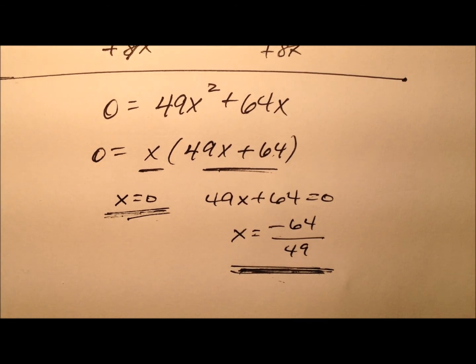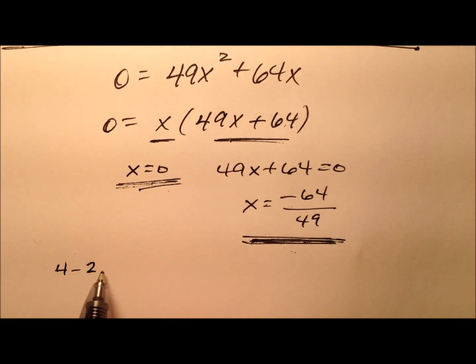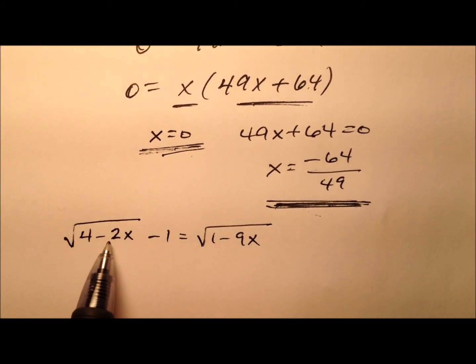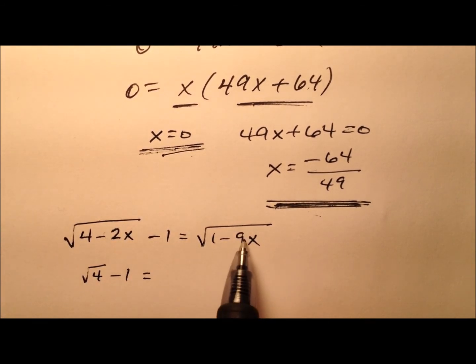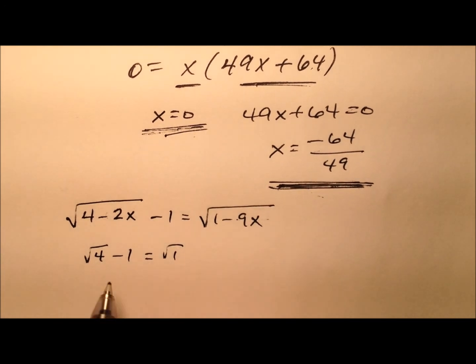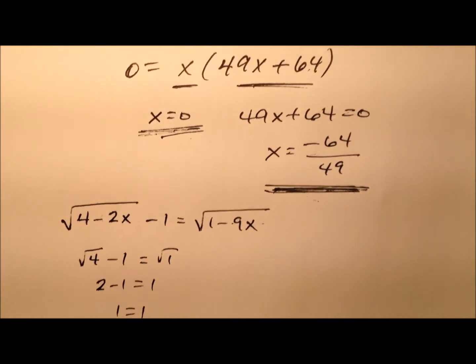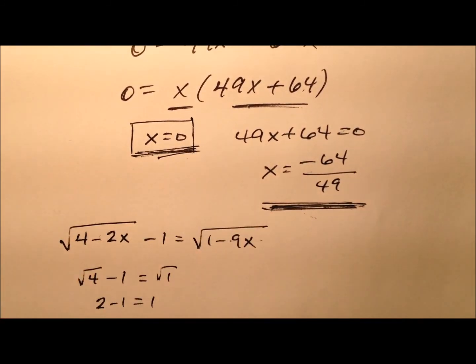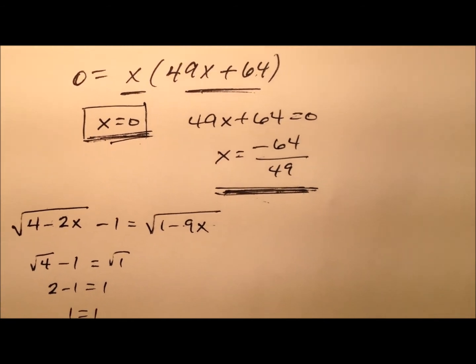But remember, we need to plug these values back into the original equation to ensure that they work and they're not extraneous solutions. Let's rewrite this original equation - the square root of 4 minus 2x minus 1 equaling the square root of 1 minus 9x. Let's plug in 0 first. So it looks like the square root of 4 minus 0, that'll just be the square root of 4 minus 1. And if that's 0, that'll just be the square root of 1. So it looks like 2 minus 1 equals 1. 1 equals 1. I like that. So we know that x equals 0 works.